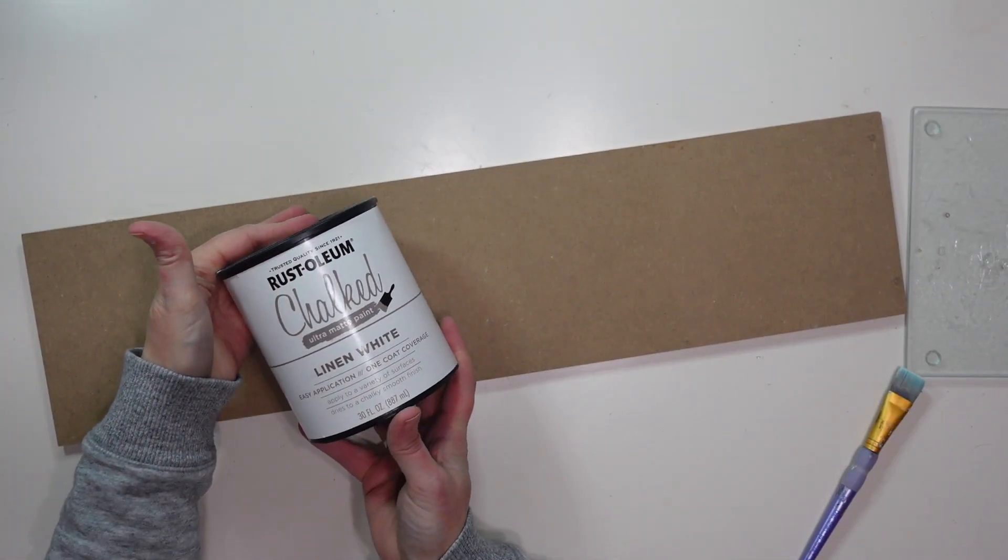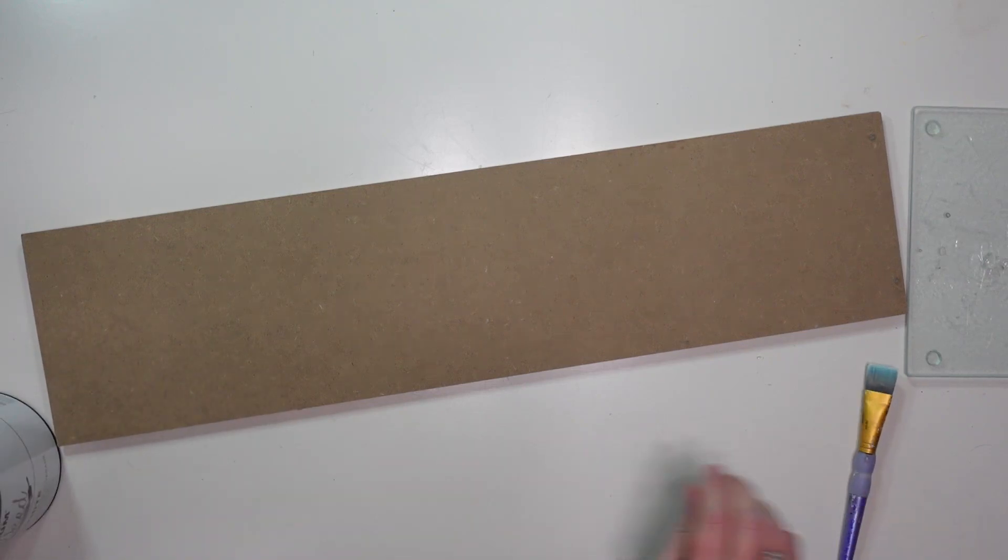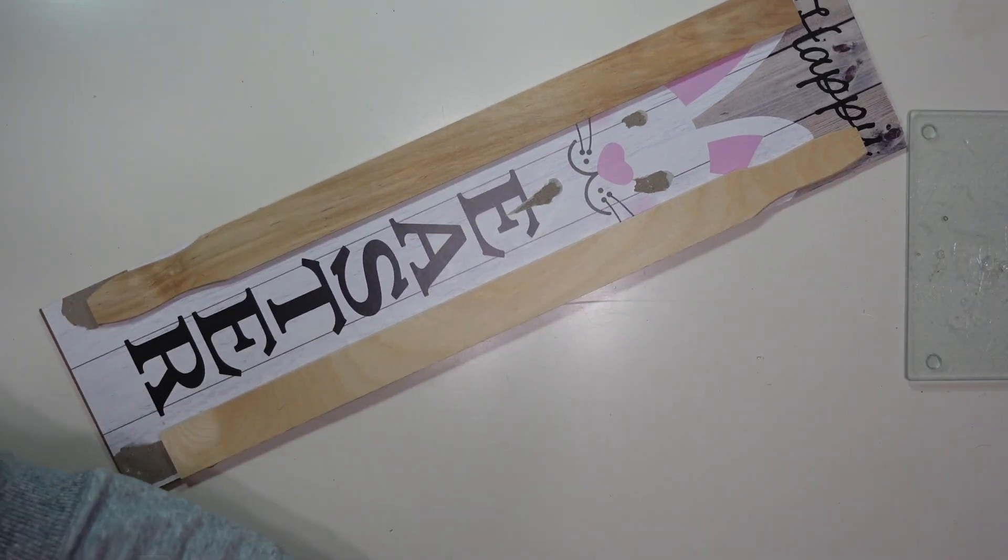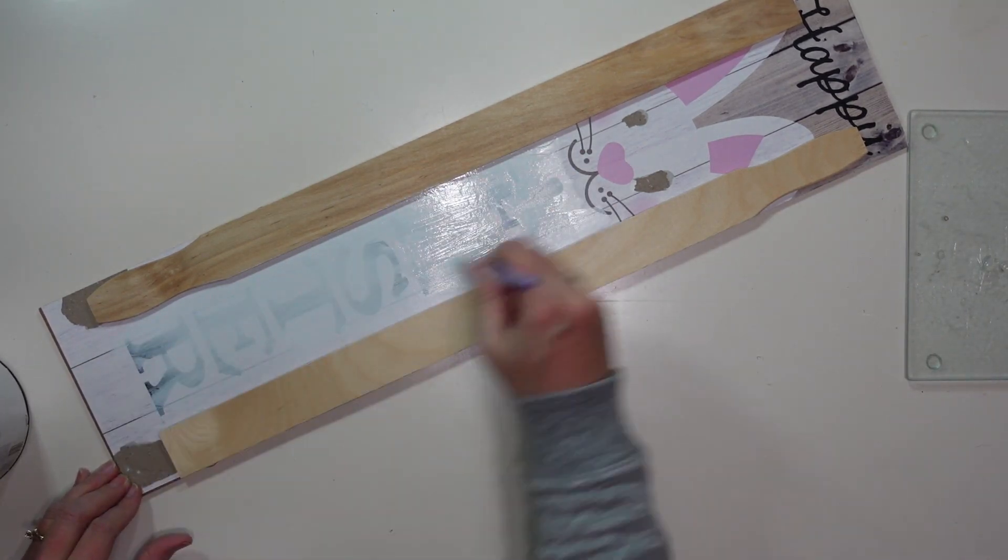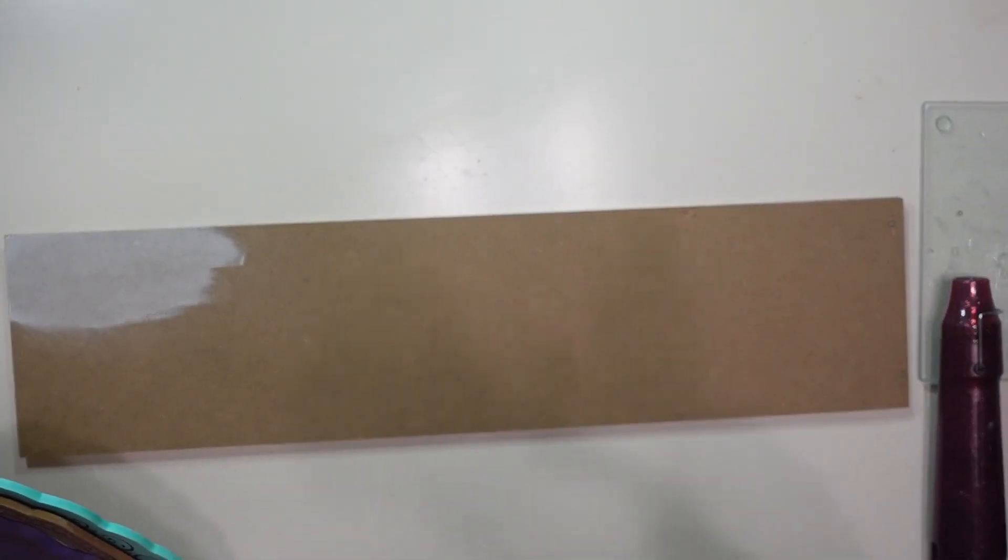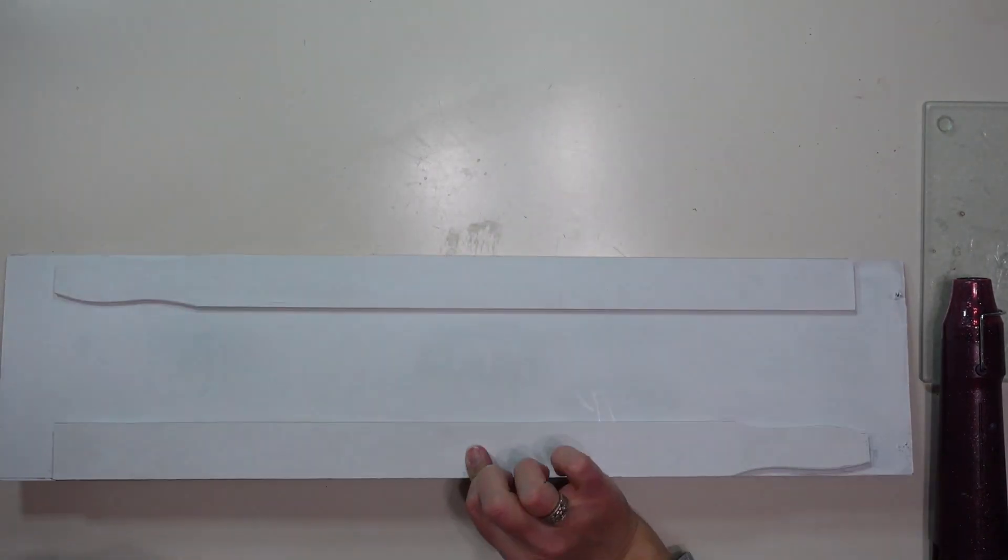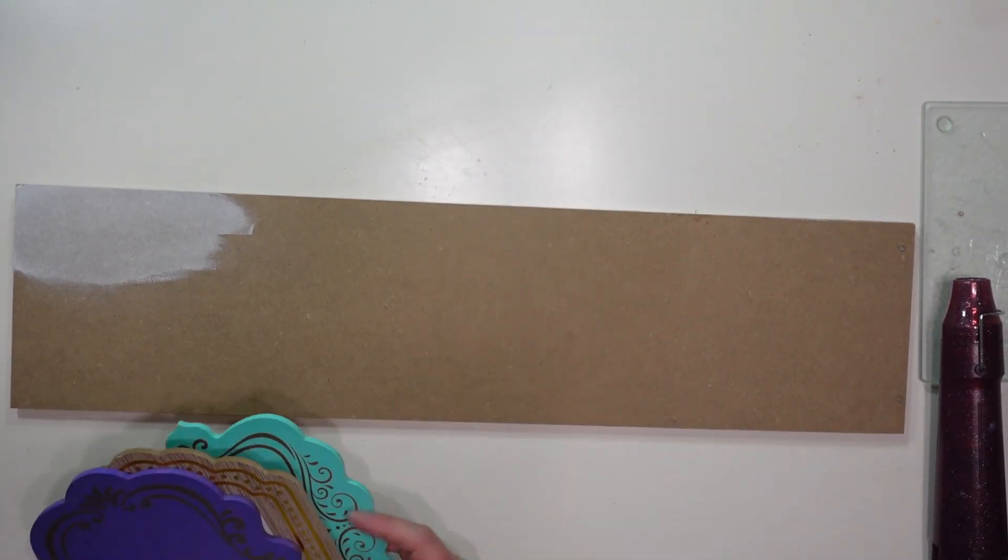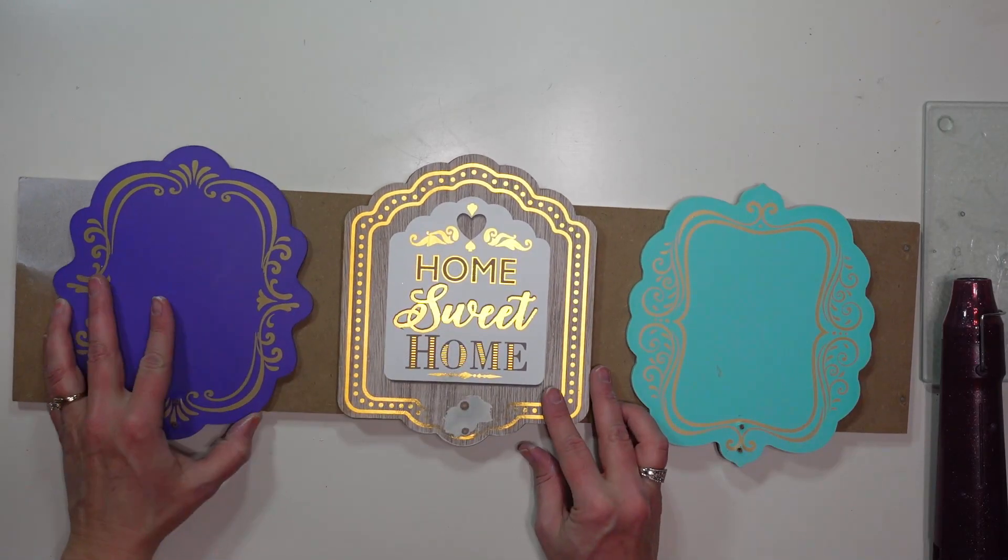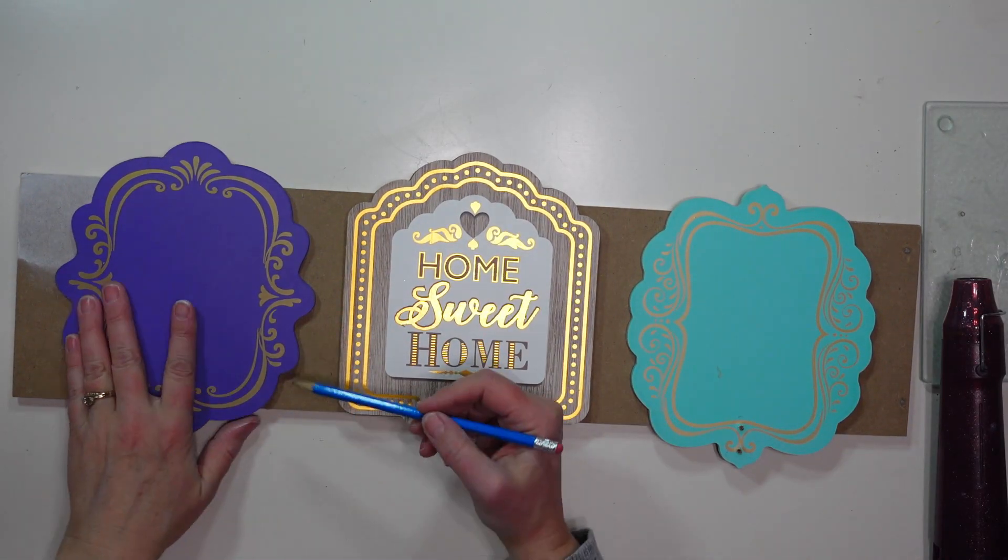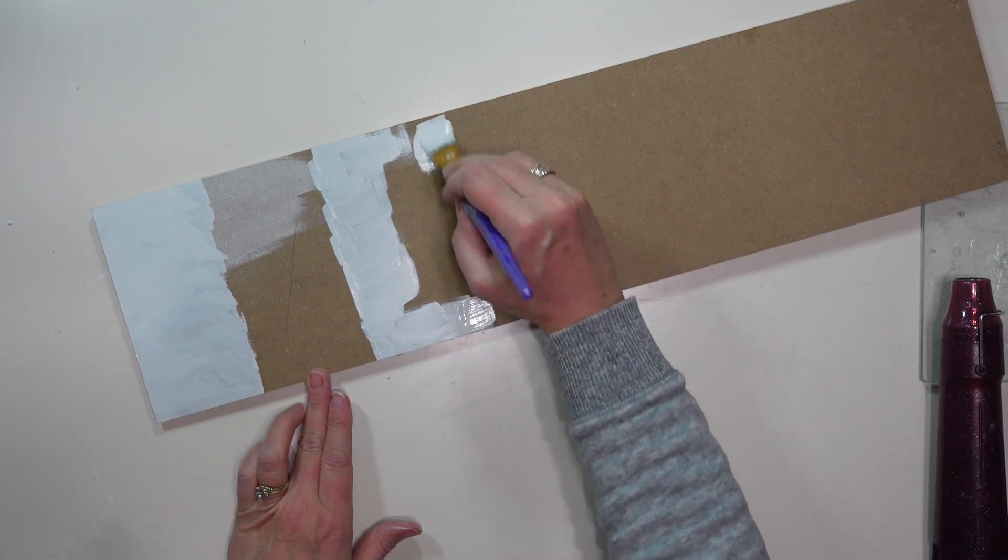Then I'm going to paint my sign using my white chalk paint. On what will be the back of my sign I'm going to give this several coats just to give it a nice finished look. On the front of my sign I'm going to lay out where my hooks will be and then I'm going to only paint what will show on the board, not underneath where I'm going to glue these hooks.